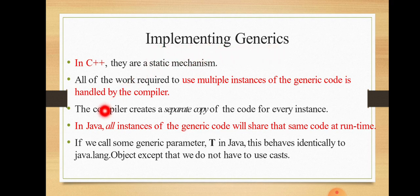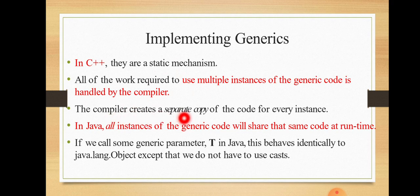Now we explain how generics are implemented. In C++, there is a static mechanism. All the work required to use multiple instances of generic code is handled by the compiler. The generic subroutine can accept integer type, string type, or double type. The compiler creates a separate copy of the code for every instance — so for integer addition, it copies the integer version; for double, the double version; for string, the string version.